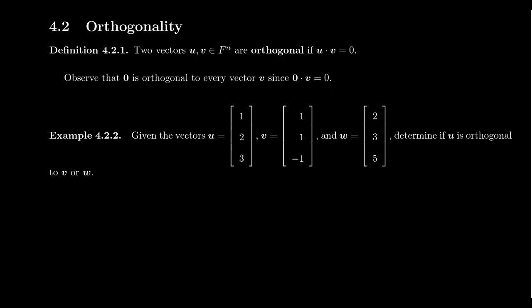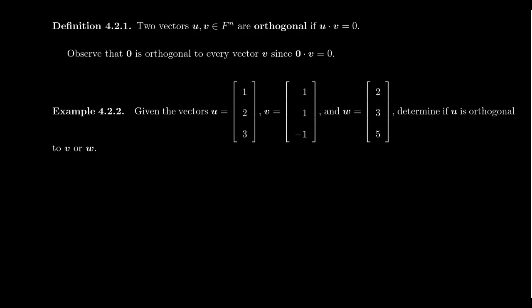I just want to demonstrate when vectors are orthogonal or not. How would you know? Let's take three vectors from R³ and ask if they are orthogonal to each other. Let's take the vector [1, 2, 3] and the vector [1, 1, -1]. If we check u dot v, we would take 1 times 1 plus 2 times 1 plus 3 times -1. We see that turns out to be 1 plus 2 minus 3, which equals zero.